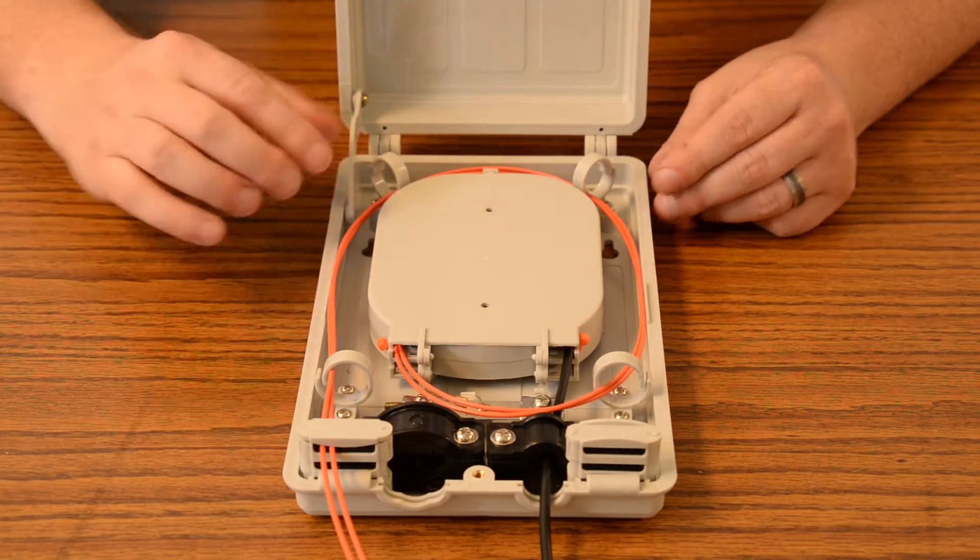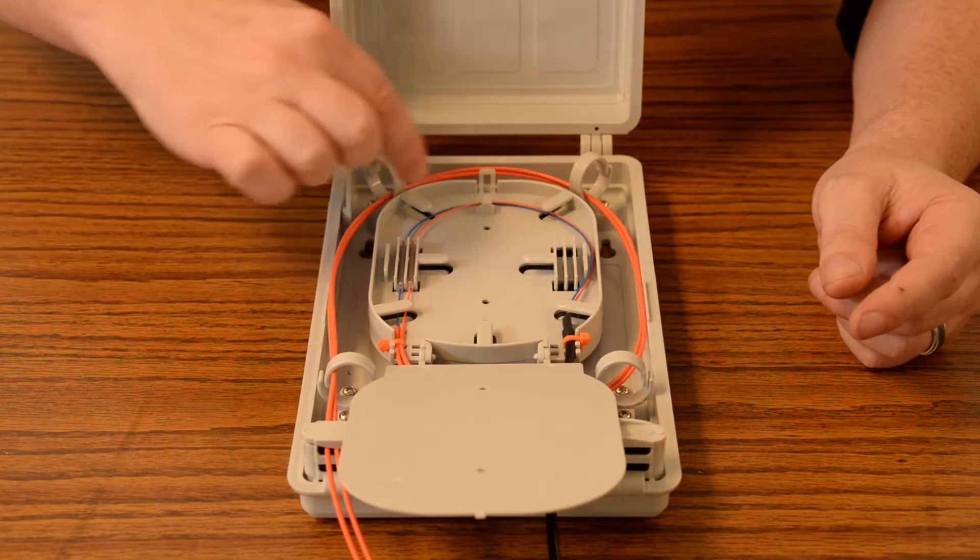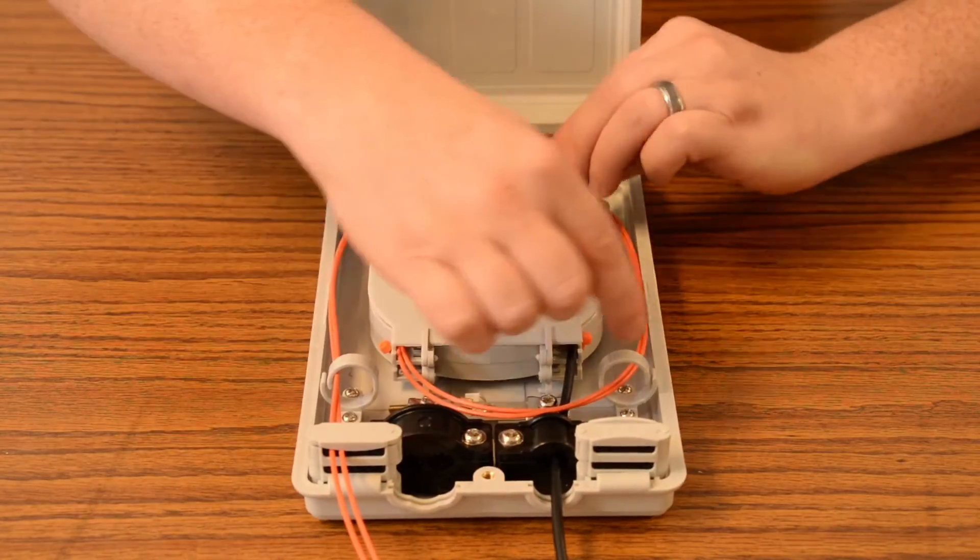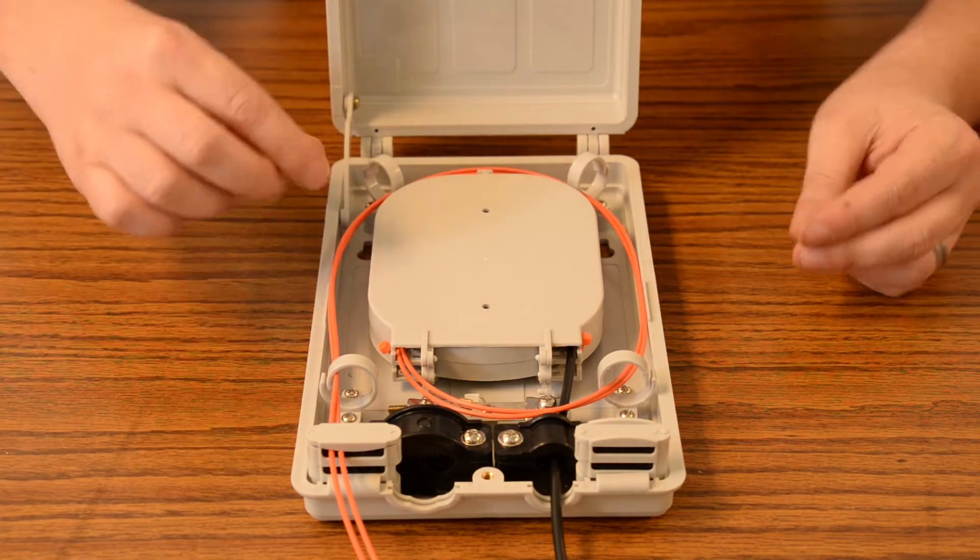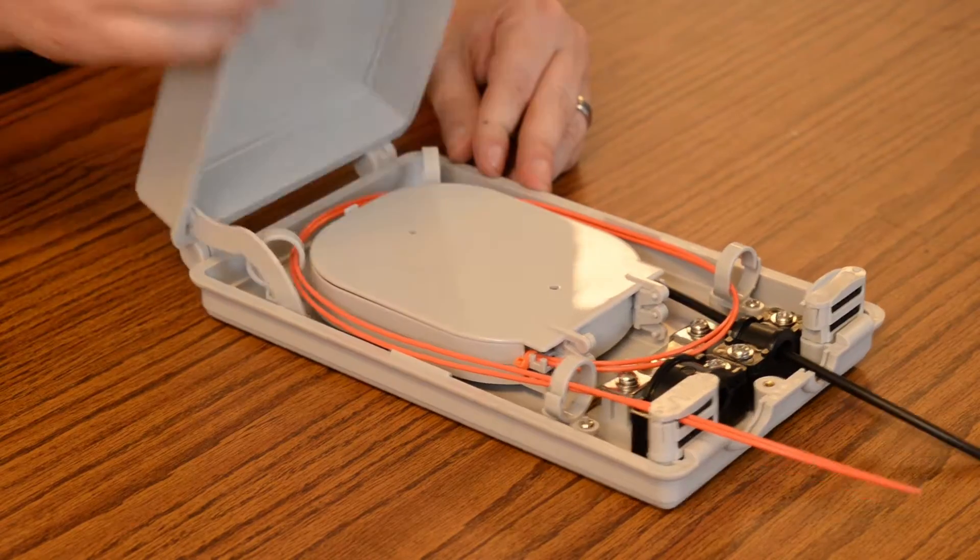First off, you're gonna have your fiber coming in here from your service provider, then comes into your splice tray which wraps around nicely here. Fiber then comes around here, looped in nicely here, and comes out here to your clients.